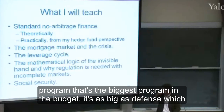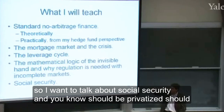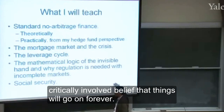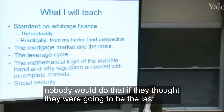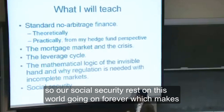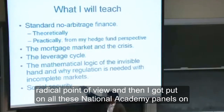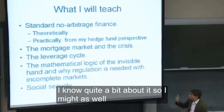And then I want to talk about Social Security. That's the biggest program in the budget — as big as defense — and the two of those are much bigger than everything else. Should it be privatized? Should it be reformed? Why did it go bankrupt? It's also an interesting mathematical problem because Social Security critically involves the belief that things will go on forever. Each generation, the young, are paying for the old. Nobody would do that if they thought they were the last generation. So Social Security rests on this world going on forever, which makes it mathematically interesting. I got interested in it theoretically, and then I got put on National Academy panels on Social Security and privatizing, so I know quite a bit about it.